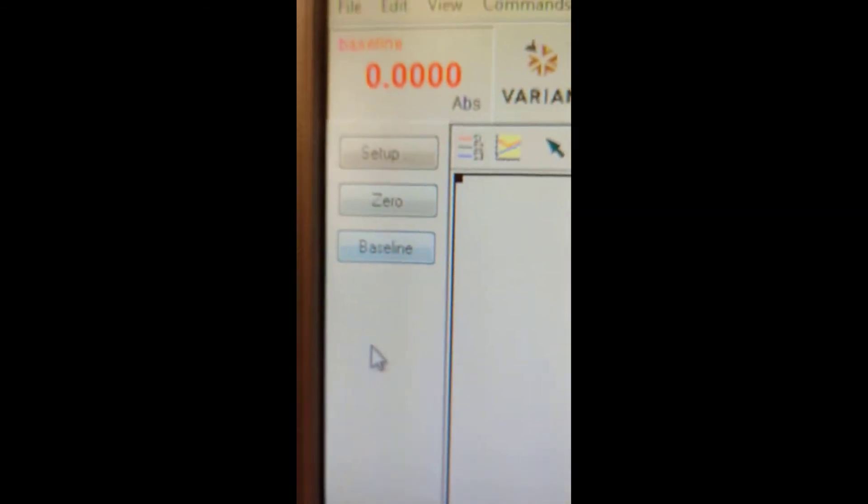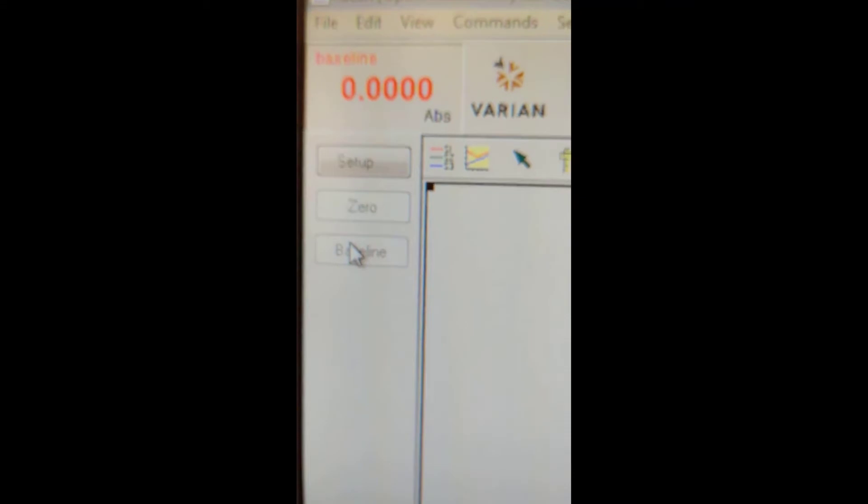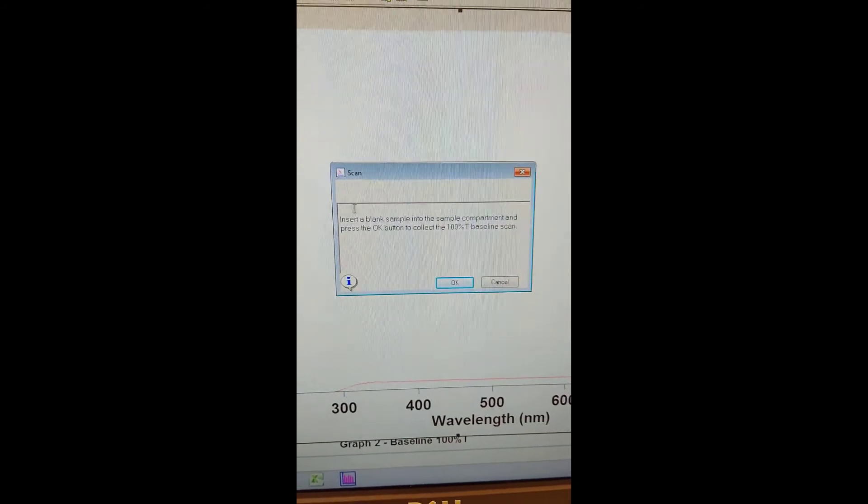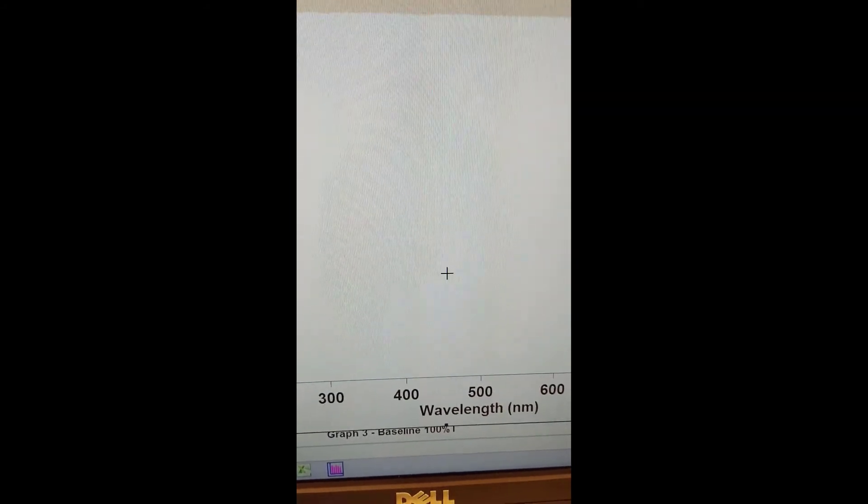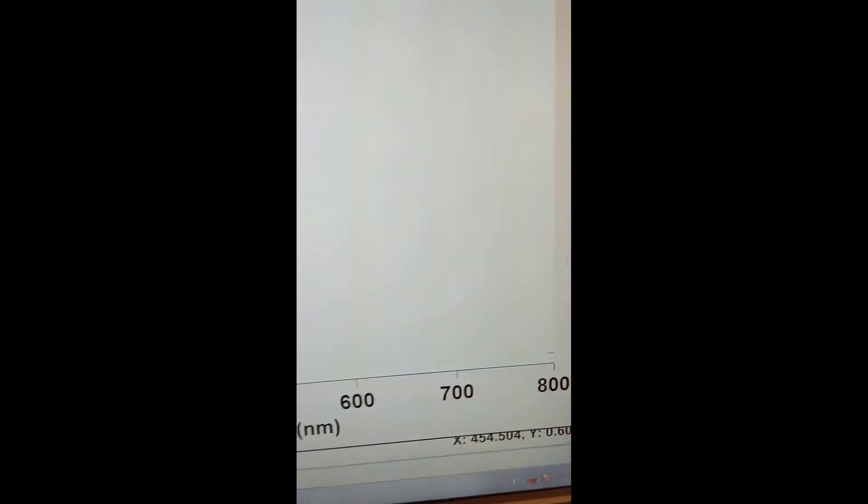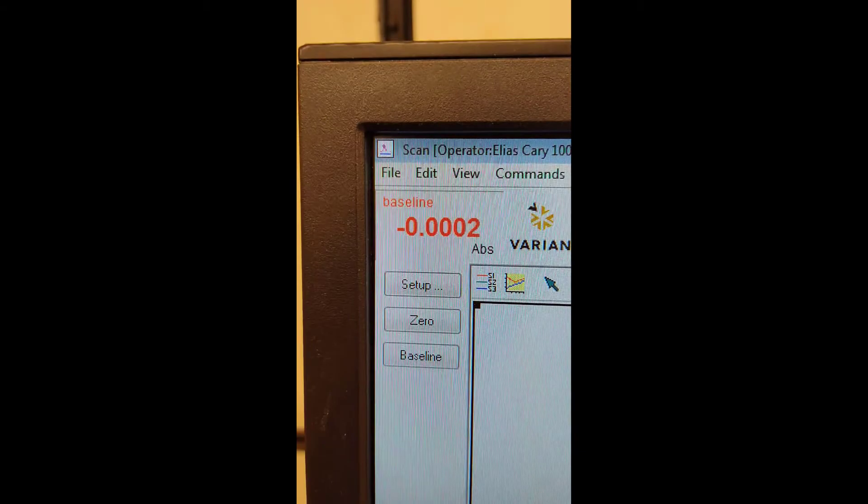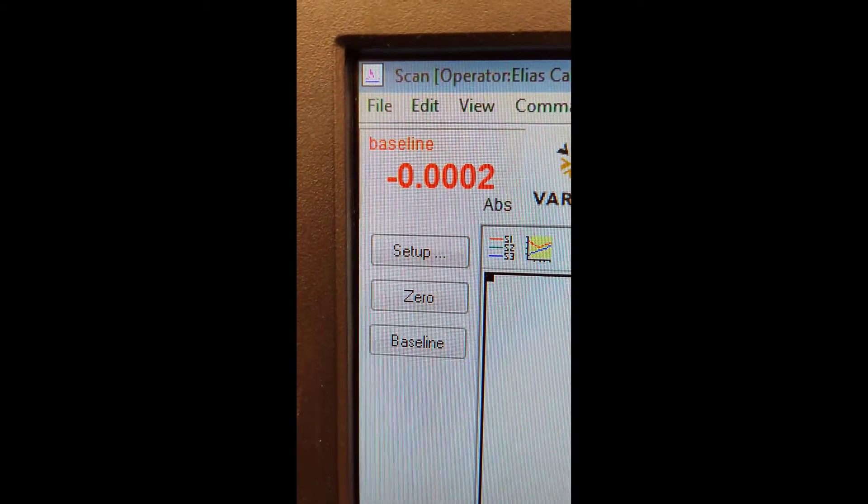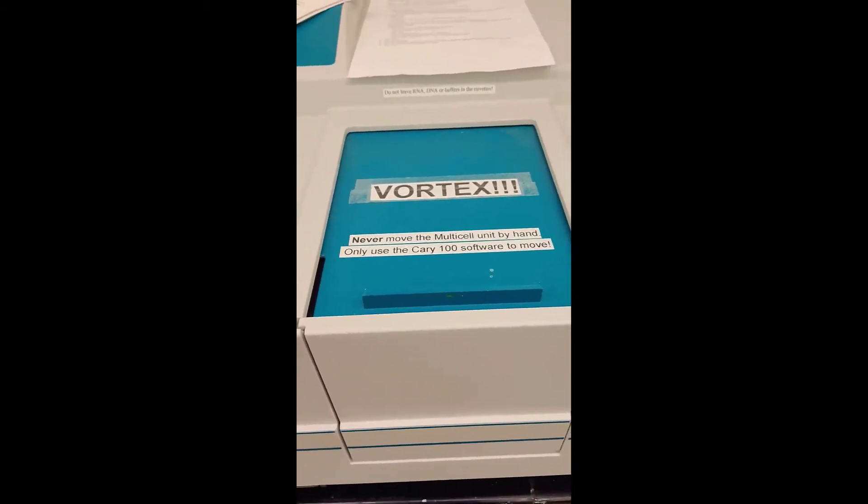Once the instrument is zeroed, I can collect the baseline. Just click baseline. It's going to prompt us to put our blanks into both sample compartments. Just hit OK, and then it should start to collect the baseline. Once the baseline is collected, you should see the word baseline in the top left corner.